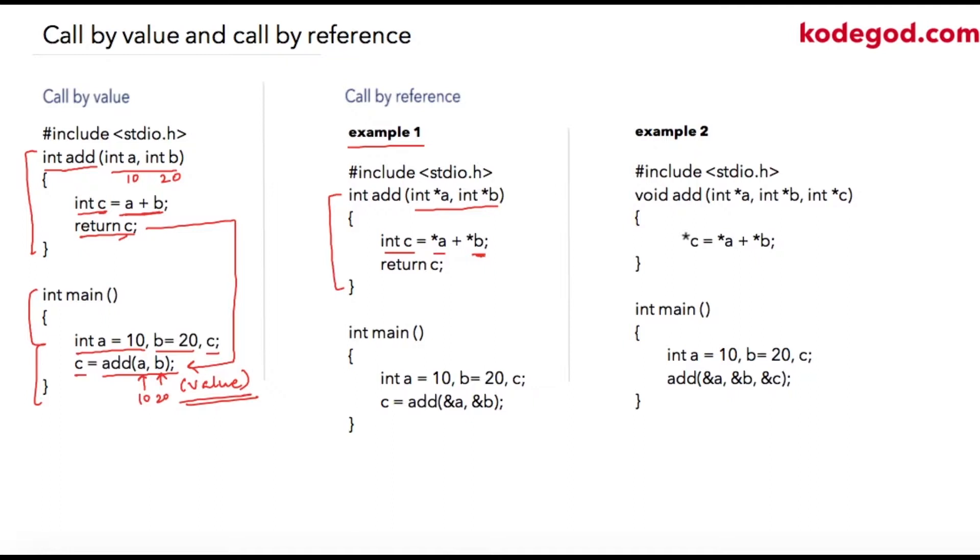So while calling this function from main I am using two variables as integer initialized to 10 and 20, and then c is a variable where we'll be storing our output. So I am calling my function add and I am passing references of these variables. I am passing address.